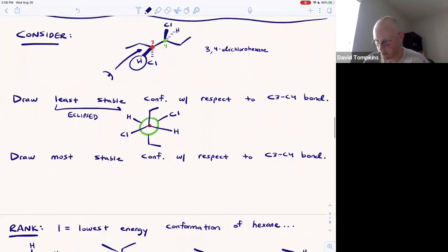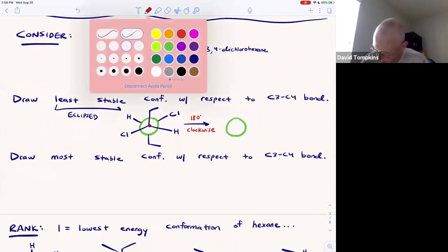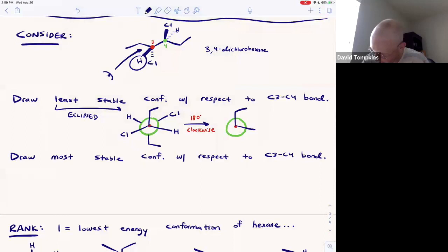The least stable conformation is going to be when the largest groups or these ethyl groups that are most electron-rich are eclipsing. I'm going to take what we've drawn above and simply rotate 180 degrees. I'll do a clockwise rotation, but you can do clockwise or counterclockwise. I'm going to keep the front carbon the same, or frozen. So the ethyl group is above the eyeball, the hydrogen is to the right, and the chlorine is to the left, spread at 120-degree angles. Eclipsing or rotating the back carbon 180 is going to place the ethyl groups eclipsed.